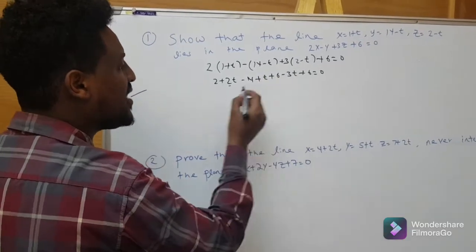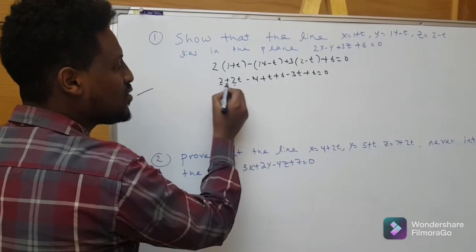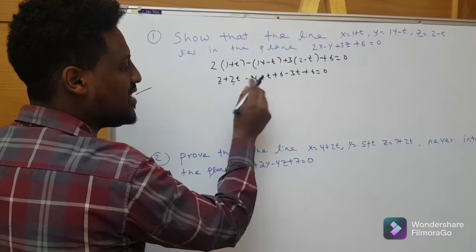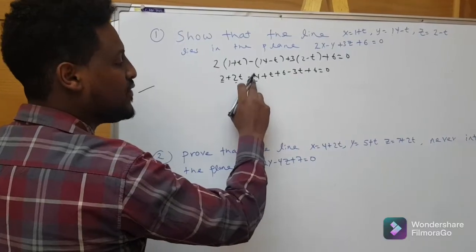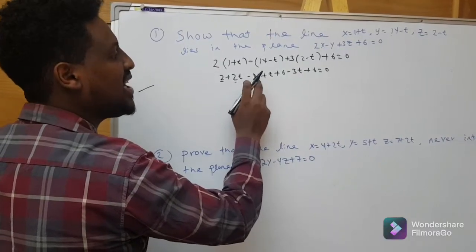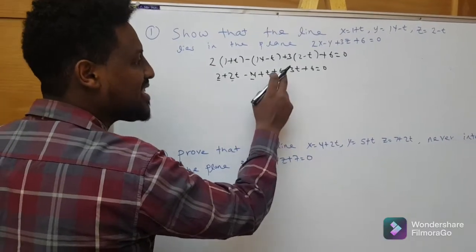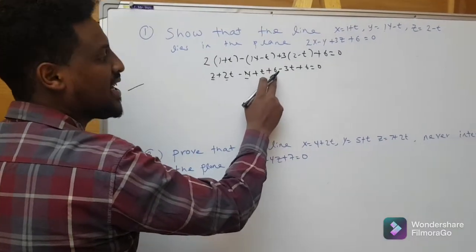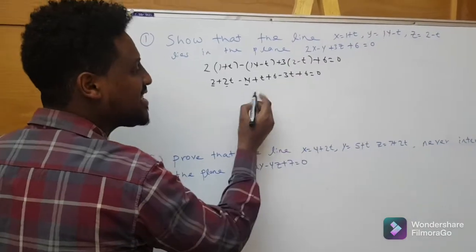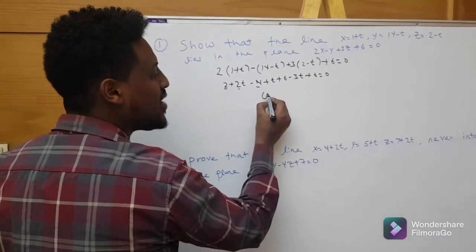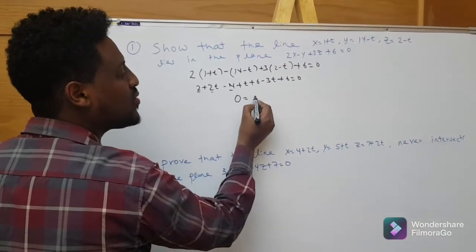As you get: 2 minus 4t; negative 12, negative 12 plus 6; negative 6 plus 6; which gives 0, so 0 is equal to 0.